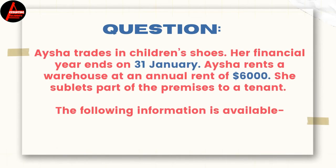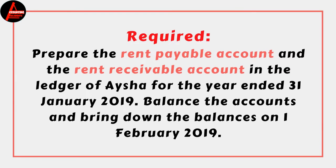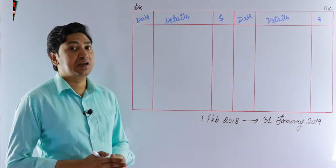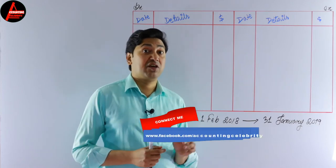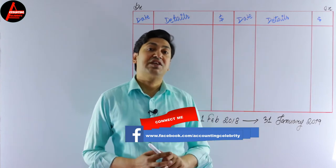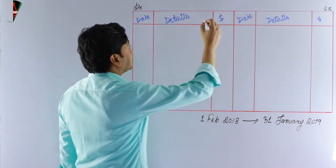Aisha rents a warehouse at an annual rent of six thousand dollars. She also sublets part of the premises to a tenant. The requirement is to prepare the rent payable account and the rent receivable account in the ledger of Aisha for the year ended 31st January 2019, and bring down the balances on 1st February 2019. The rent payable account is already done — a link is in the description.